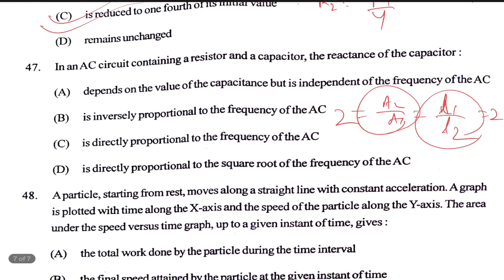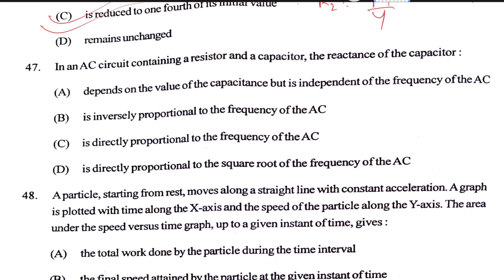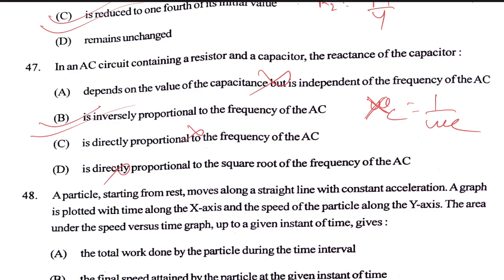In an RC circuit containing a resistor and capacitor, the reactance of the capacitor is Xc = 1/(ωC). So Xc depends on the value of capacitance but is independent of frequency — wait, actually it depends on frequency through ω. It is inversely proportional to frequency, not directly proportional.